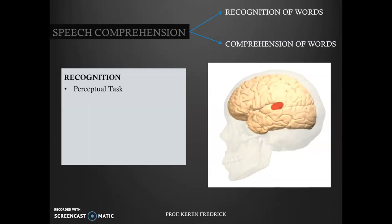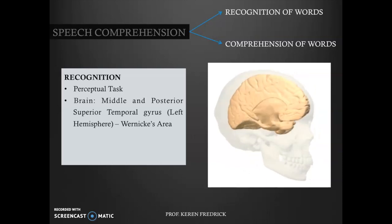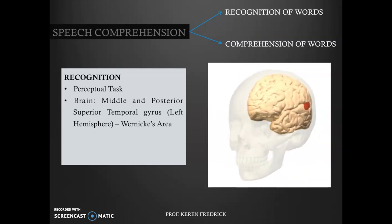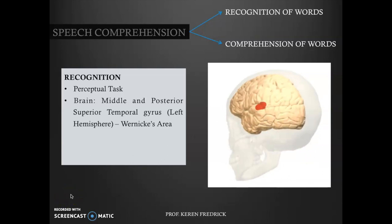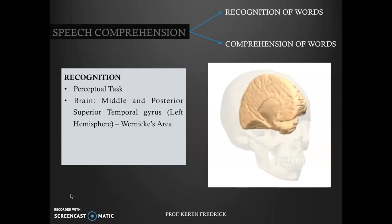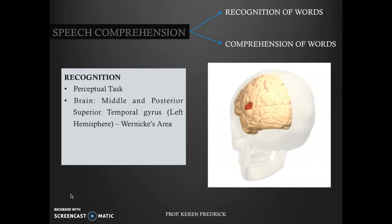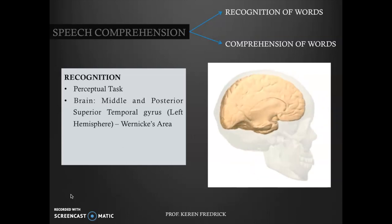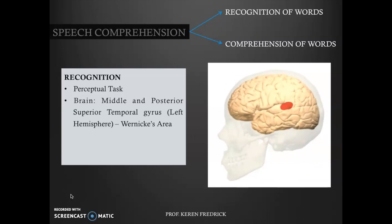Recognition is basically a perceptual process which involves memory of different sounds. The brain regions involved are the middle and posterior superior temporal gyrus, indicated with the red mark in this animated figure. This region is also called the Wernicke's area. The perceptual task involved in recognition primarily deals with phonemes — perceiving different sounds and different alphabets as a holistic word.